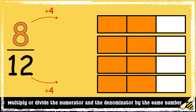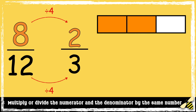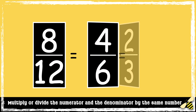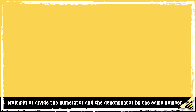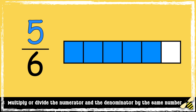Let's go back to 8/12, but this time I'm going to divide the numerator and the denominator by 4. 8 divided by 4 is 2, and 12 divided by 4 is 3 — so 8/12 is equivalent to 2/3.